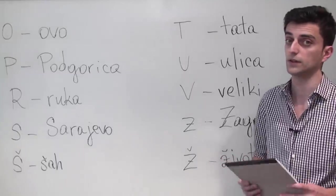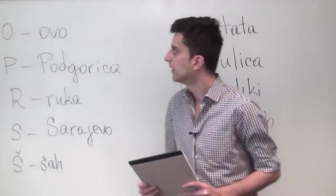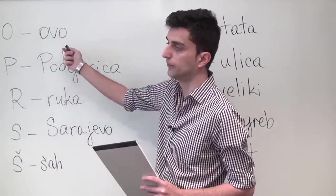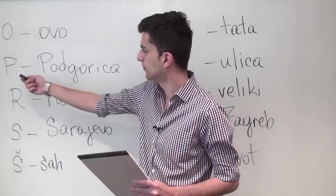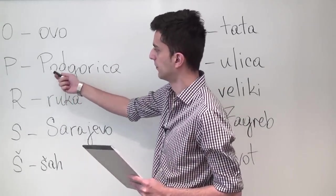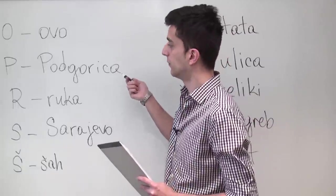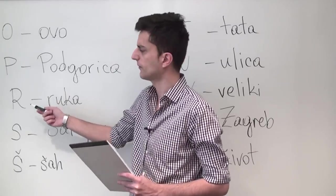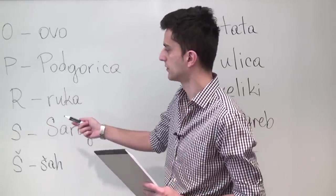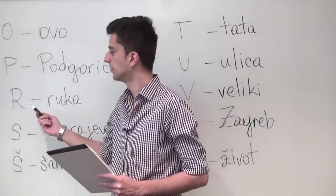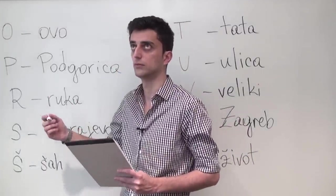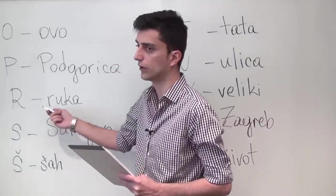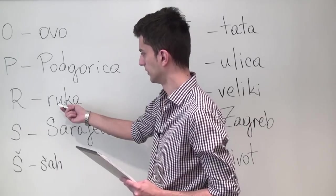And the remaining 10 letters after we've covered the first 20 are the following. Letter O in English is pronounced O in BCS, as in the word ovo meaning this one. Letter P is pronounced P, as in Podgorica which is the capital city of Montenegro. Letter R is pronounced as R. It's a bit different sounding than R in English, so pay attention to it and make sure you listen carefully when you hear a native speaker pronounce it. So R, as it can be heard in the word ruka.